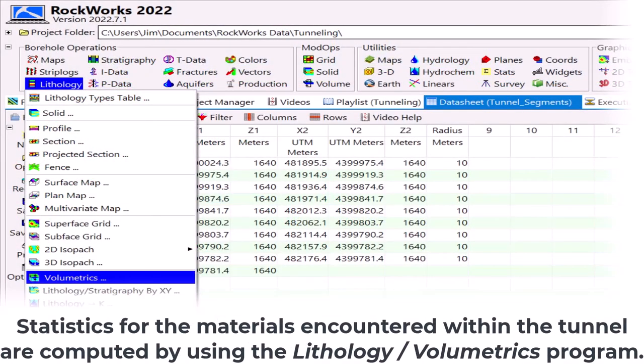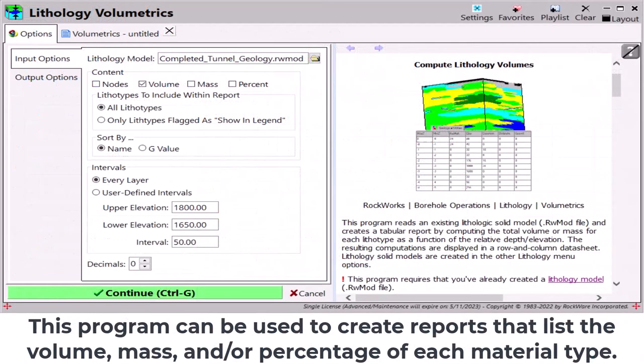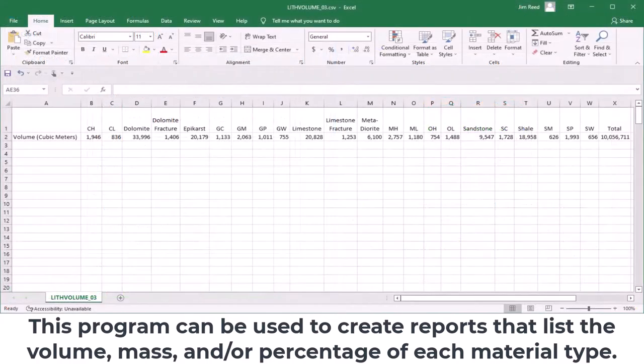Statistics for the materials encountered within the tunnel are computed by using the Lithology Volumetrics program. This program can be used to create reports that list the volume, mass, and or percentage of each material type.